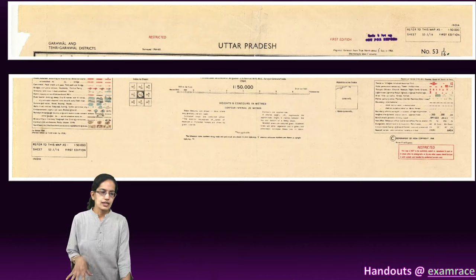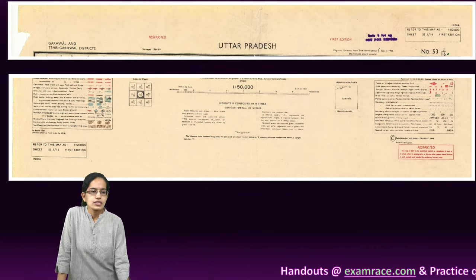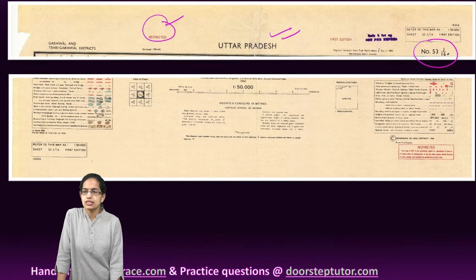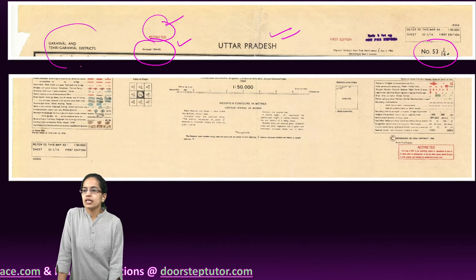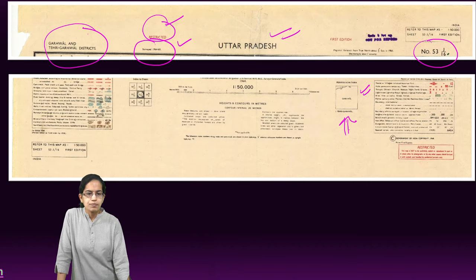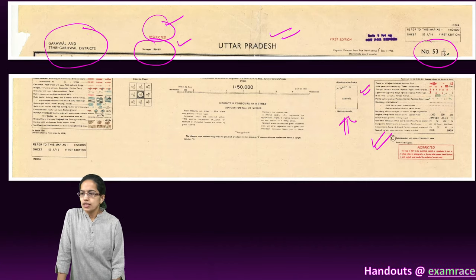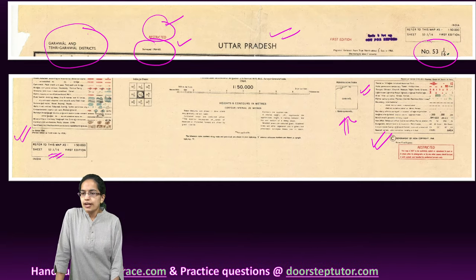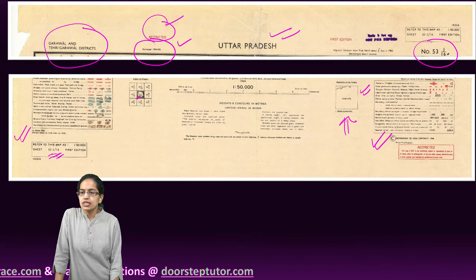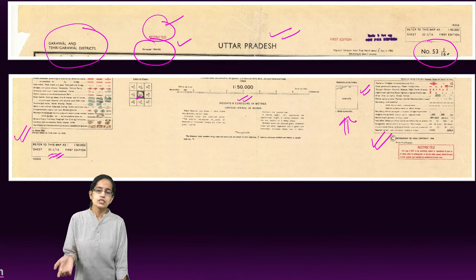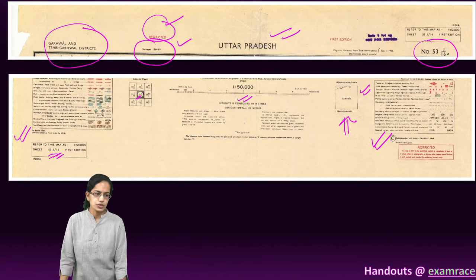On the detailed map, this is the topo sheet number. Then you have the state; if it is restricted, it would be mentioned as restricted. The year in which it was surveyed, the districts it would be covering, and an administrative index map are given here. The legend appears on both sides, and the sheet number is 53J16. The scale is 1 is to 50,000, on which this topo sheet is made.